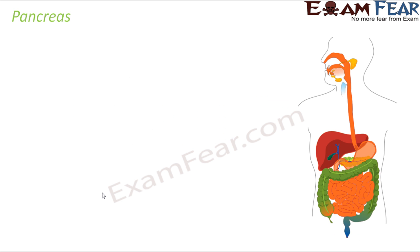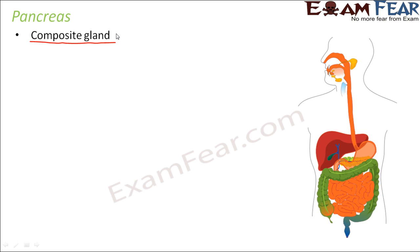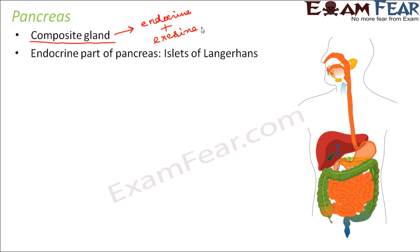So now the next topic is the pancreas. One interesting thing about the pancreas is that it acts as both an endocrine gland and an exocrine gland. That is why it is called a composite gland. One part of the pancreas has a duct and one part is without a duct. Here we are going to talk about the endocrine part of the pancreas, since we are discussing the endocrine system.